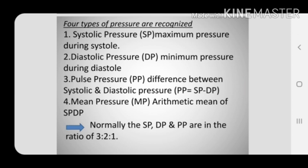Diastolic pressure is the minimum pressure during diastole. Diastole means relaxation of the ventricles. In other words, diastolic pressure is the pressure in the arteries when the heart rests between beats. This is the time when the heart fills with blood and the pressure felt in arteries is minimum. A normal diastolic pressure is lower than 80 millimeter of mercury.